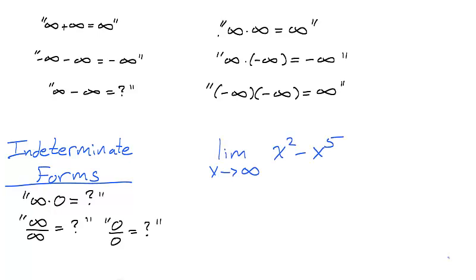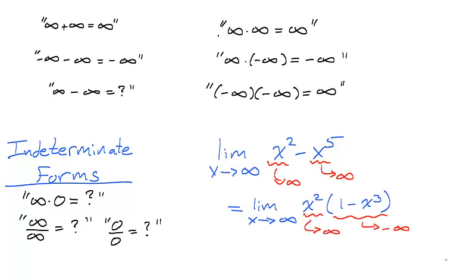Take for example the function x squared minus x to the fifth. As x approaches infinity, both x squared and x to the fifth approach infinity. This leads us to the form infinity minus infinity, which is indeterminate. Factoring the expression leads us to the product of two functions: x squared, which approaches infinity as x approaches infinity, and 1 minus x cubed, which approaches negative infinity as x approaches infinity. We now have the form infinity times negative infinity, which we can determine, and is described as negative infinity. Therefore, the function x squared minus x to the fifth does not have a horizontal asymptote for the positive x axis, because the limit as x approaches infinity is not finite — it is negative infinity. This tells us that the function's y value becomes unboundedly negative as x approaches infinity.